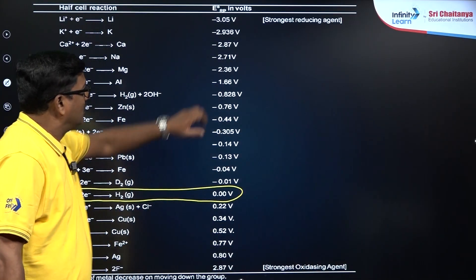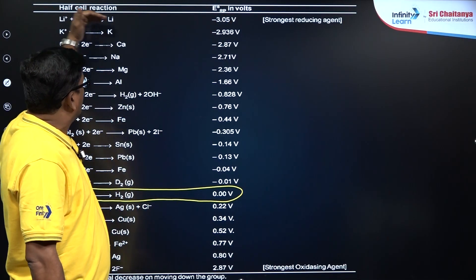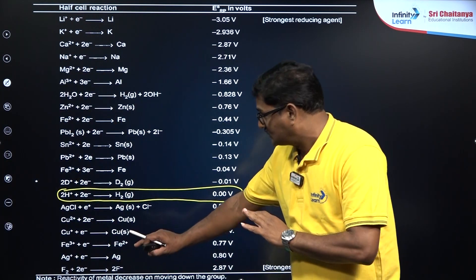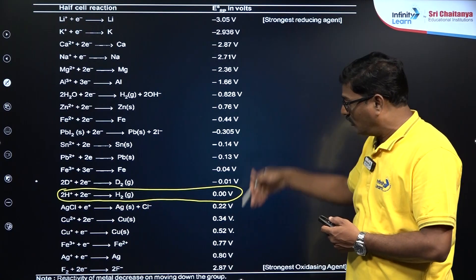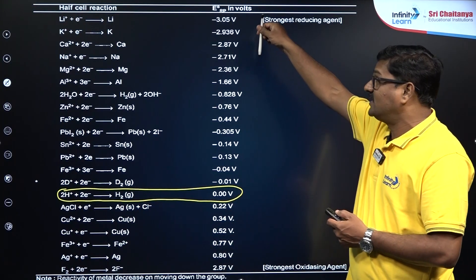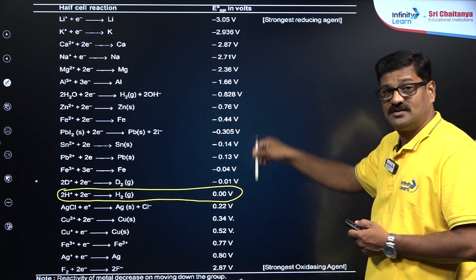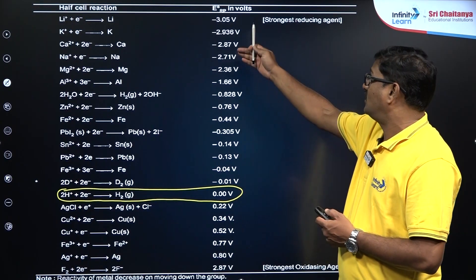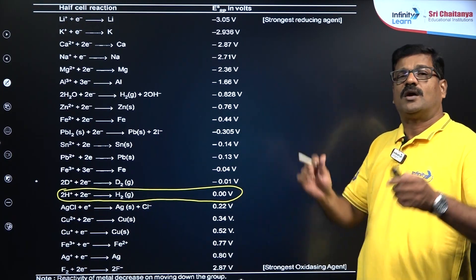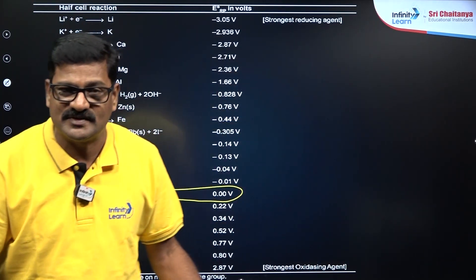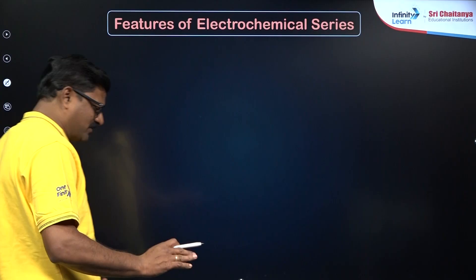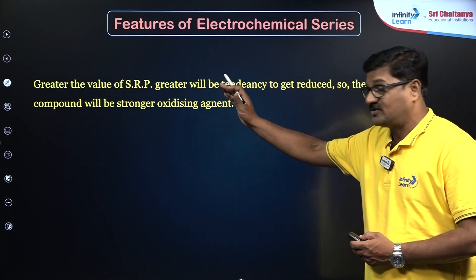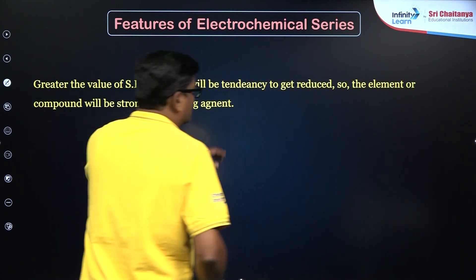In this order, from top to bottom, lithium is the strongest reducing agent and fluorine is the strongest oxidizing agent. From top to bottom in the electrochemical series, oxidation potentials and oxidation capacity of the electrodes increase; from bottom to top, reducing nature increases. The key feature is: the greater the value of SRP (standard reduction potential), the greater will be the tendency to get reduced.